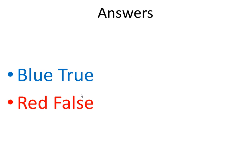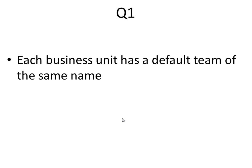The answer color coding is: blue is true, red is false. Question one: each business unit has a default team of the same name. The answer is true.